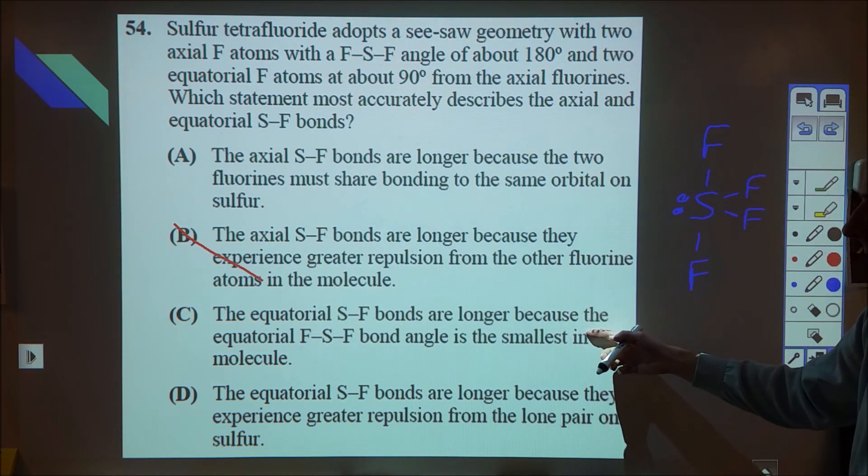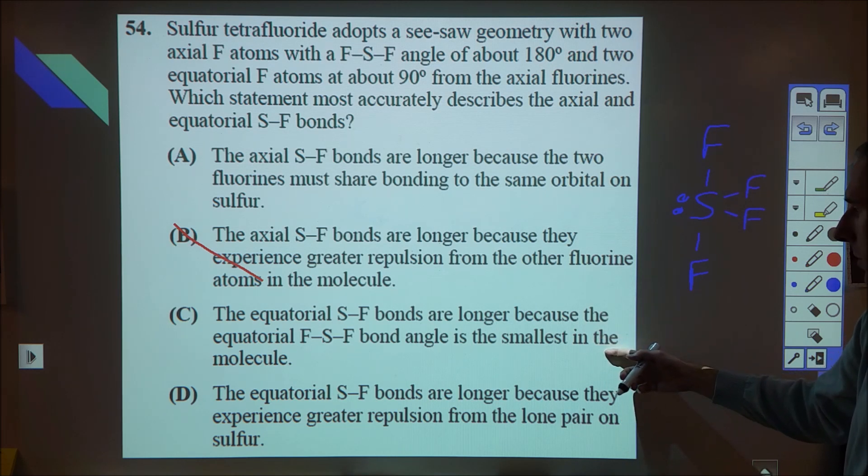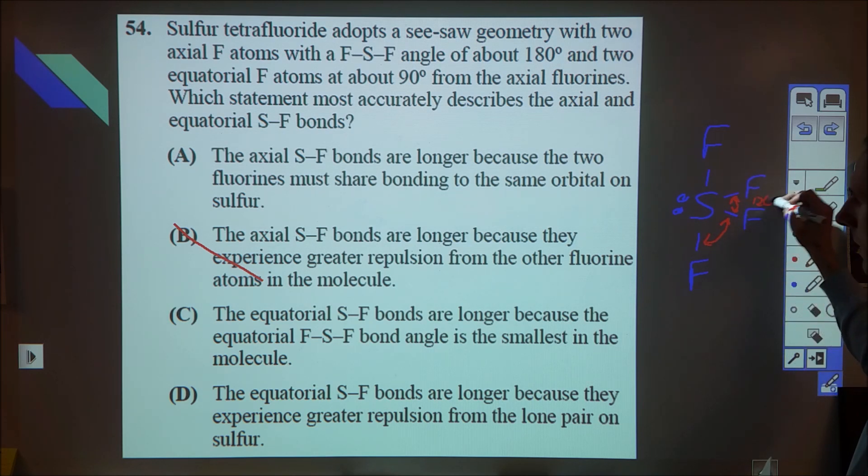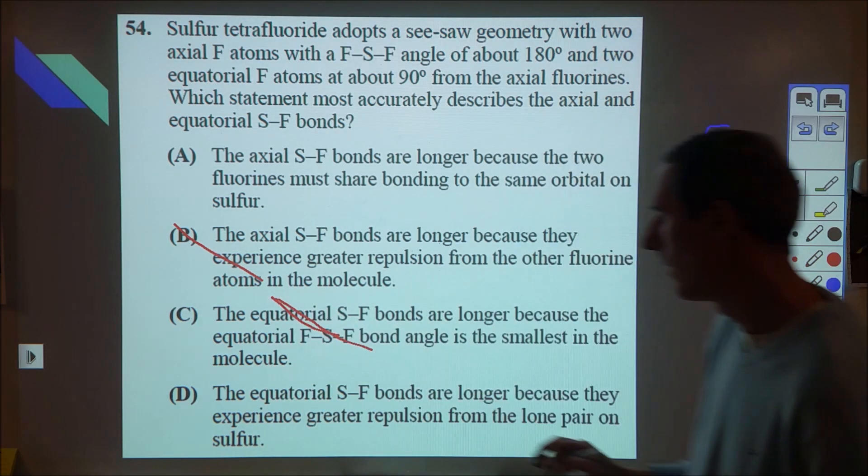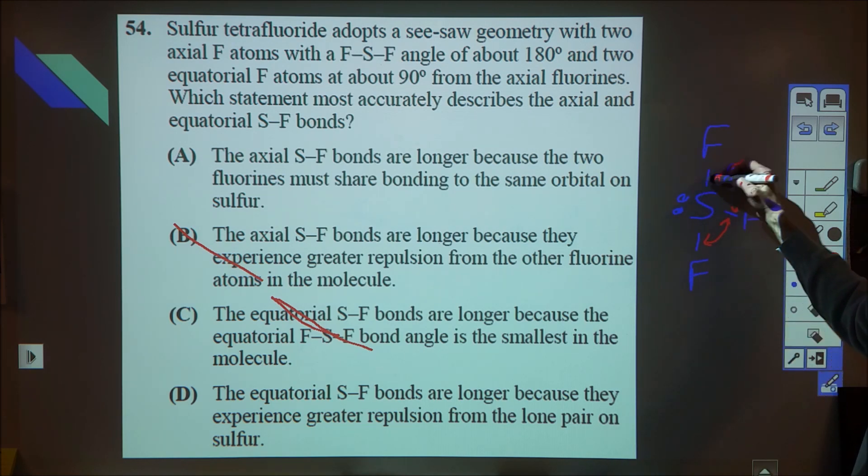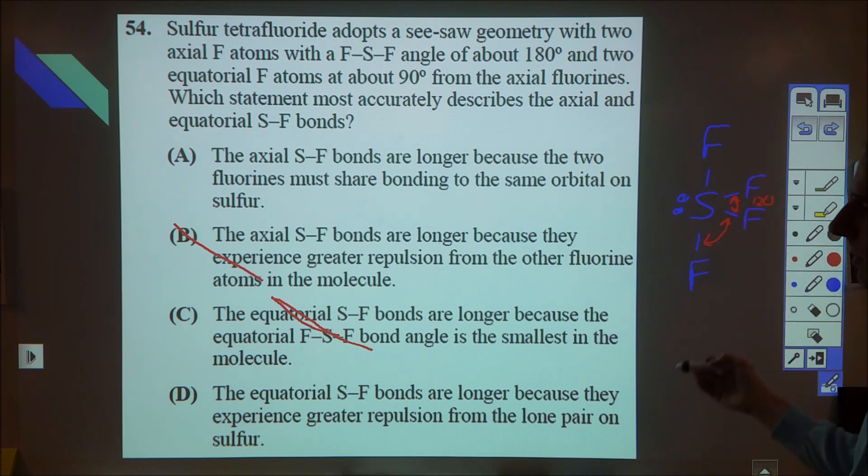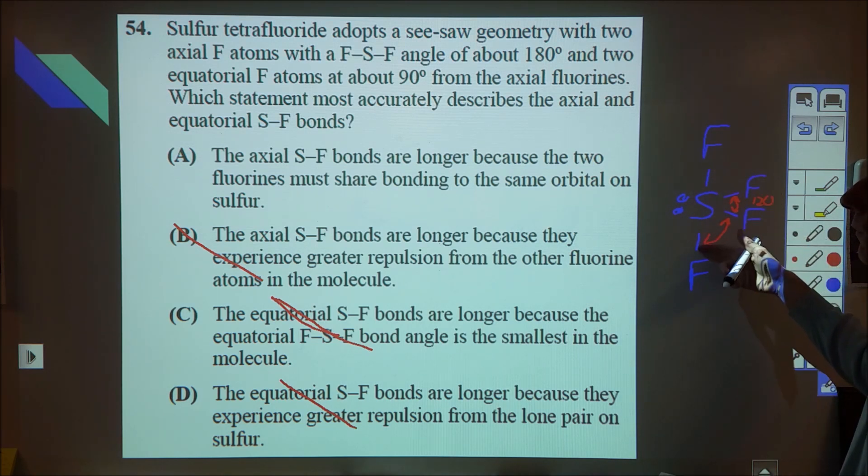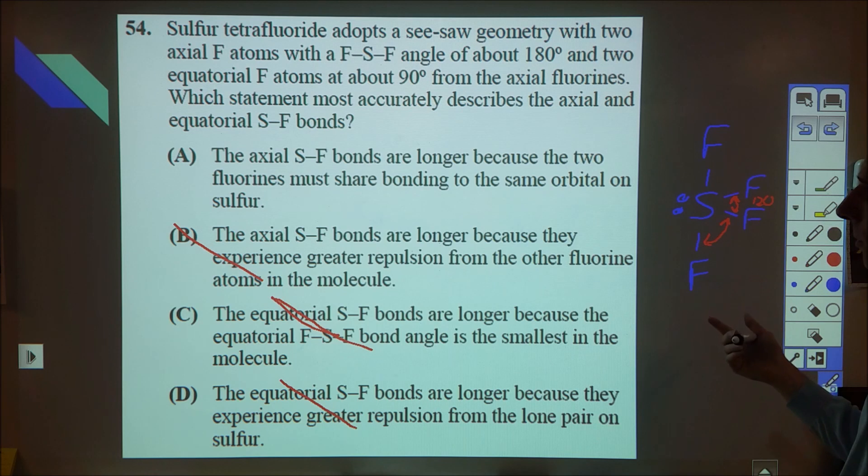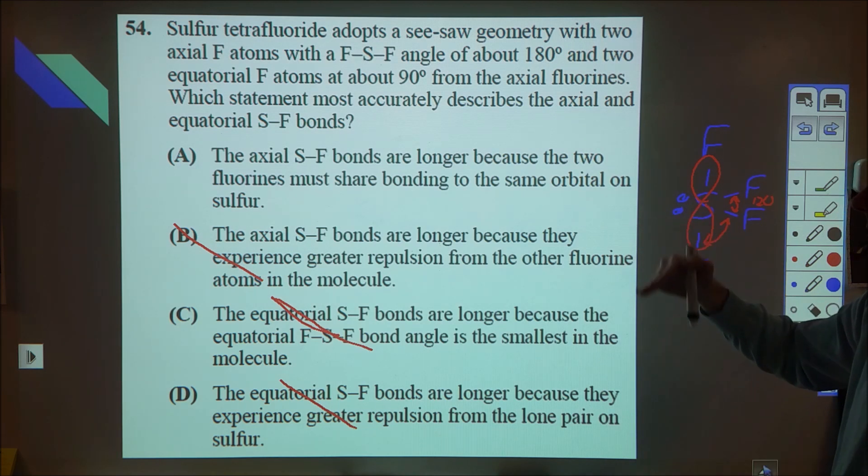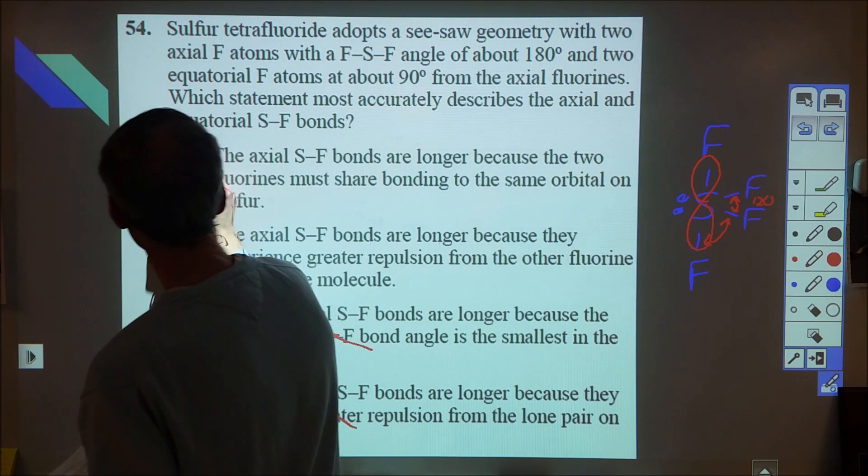The equatorial bonds are longer because the equatorial SF bond angle is the smallest in the molecule. We know that that's not true because we have a 90-degree bond angle here, and these have 120. So C is incorrect. And then the equatorial SF bonds are longer because they experience greater repulsion from the lone pair on the sulfur. The lone pair is going to cause the angle to push these closer together, but that's not going to change the bond length. So D is also looking bad. At that point, we go back and we say, okay, the axial, these two fluorine sulfur bonds are longer because the two fluorines must share bonds in the same orbital. I don't know whether that's true or not, but it makes sense in the fact that we would expect the P orbital there to be involved. I don't know why that would make necessarily the bond longer. Maybe it's because these electrons are experiencing greater repulsion, but it seems logical, and the other three are wrong, and so I'm going to go with A.